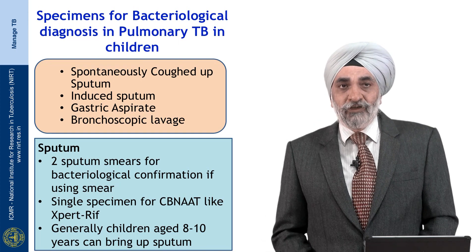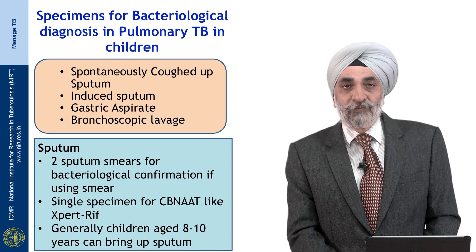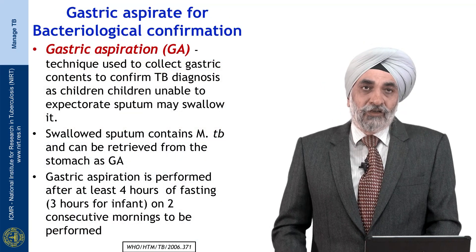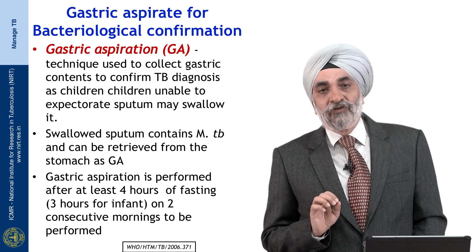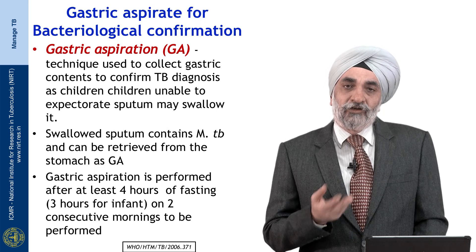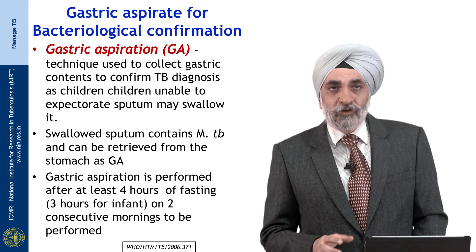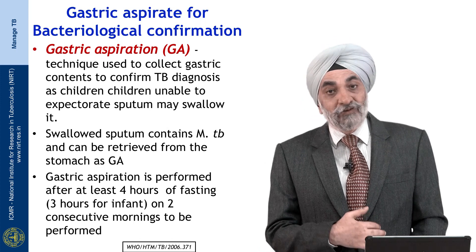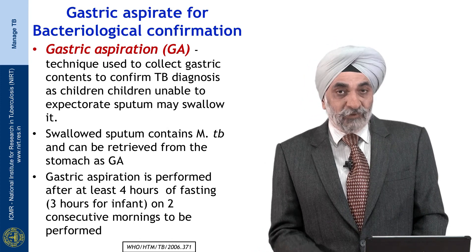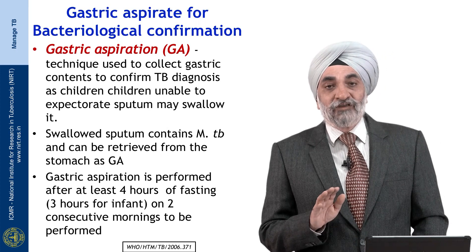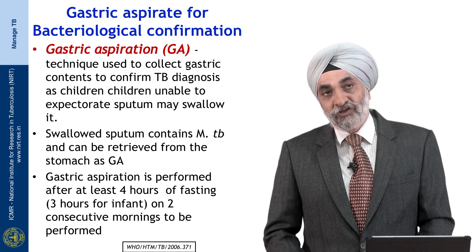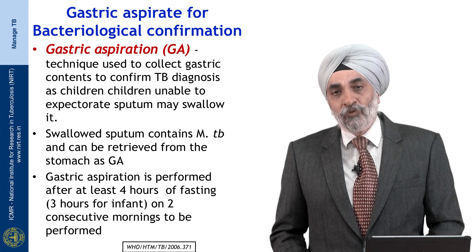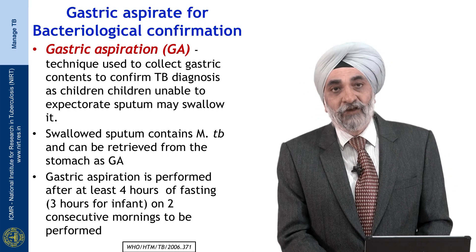For sputum, you need two sub-specimens if it is for smear; for CB NAAT a single specimen is needed. Generally children up to 8 to 10 years can bring up sputum. Gastric aspirate is a technique used to collect gastric contents to confirm TB diagnosis, as children often swallow sputum. That swallowed sputum, which may contain MTB, can be retrieved from the stomach — but only if the child remains fasting. Gastric aspiration is performed after 4 to 6 hours of fasting in an older child, or about 3 hours in an infant, on 2 consecutive mornings for smear, or a single specimen if CB NAAT is available.